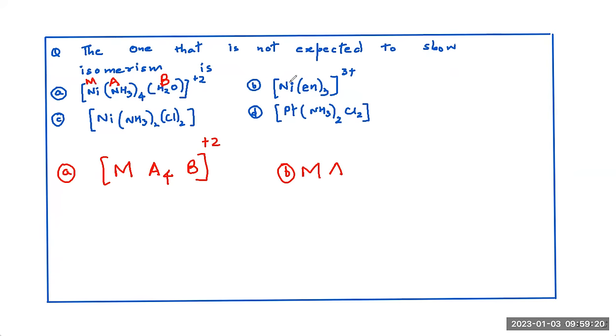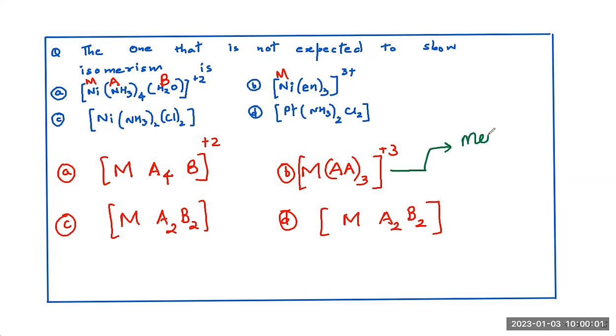Similarly, M, that is nickel, metal is indicated by M. En thrice, that is a symmetrical bidentate ligand, AA thrice, raised to 3 plus. C is M metal, ligand A2B2. And D is metal, followed by ligand A2B2. So which of the following is not expected to show isomerism? The question is very clear, very direct. See, if you remember, this gives the mer and the fac isomerism, that is the trans and the cis isomerism, a very famous general formula. This will definitely give us cis and trans, as it is A2B2. This is same cis trans, A2B2.